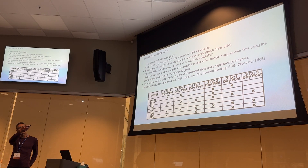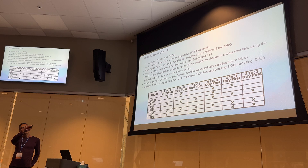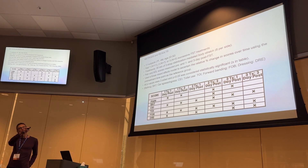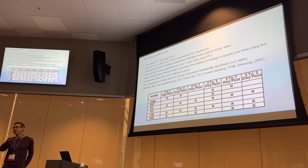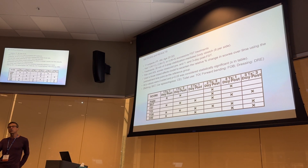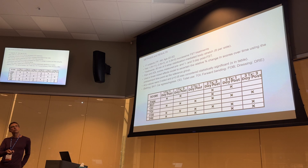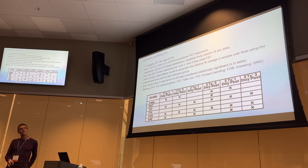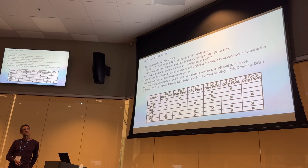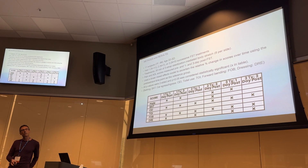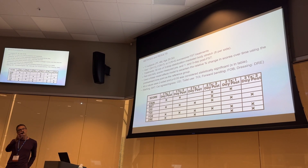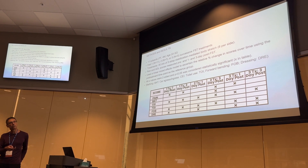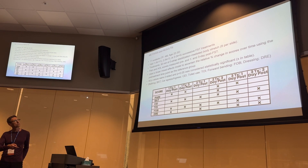The scores in the table are related to: the first column — pain; the second, BAT, means bathing; the third, CEI, is car ingress/egress, or transfers in and out of the car; TY is toilet use; FOB is forward bending; and ZRE is dressing. You can see there's a distribution of improvements over those weeks.